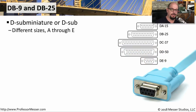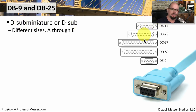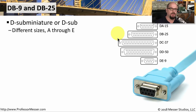Another common copper connector is the DB9 connector. The D in DB9 stands for D-sub miniature, or D-sub, and it specifies this type of connector that looks like a D. There are different sizes from DA through DE. You'll see the DB25 listed, and the DE9 is listed at the bottom. The DB25 was one of the most popular serial connector types early on in computing, and when the 9-pin version was released, we started calling it the DB9, even though technically it's a DE9.